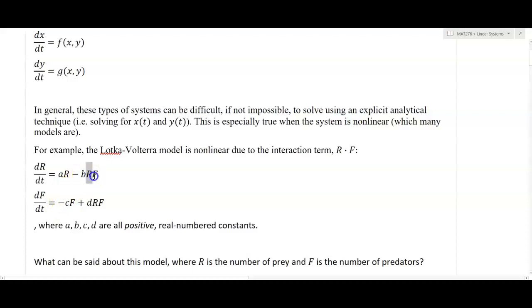This interaction term, this RF here, is what makes this nonlinear. The way you can think about that is it's the product of two dependent variables, as if we have a dependent variable squared. I know it's not totally true because R and F don't have to have the same values, but they're values of the dependent variable.